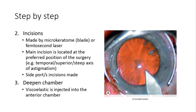Step two is the incision. It's made by a microkeratome — essentially a blade — or it can be made by the femtosecond laser. The main incision is between 1.8 to 3 millimeters wide, located in the preferred position of the surgeon — for example, temporal, superior, or in the steep axis of the astigmatism. Side port incisions of about 1.2 millimeters are also made, placed at about 60 degrees to the left of the main incision.